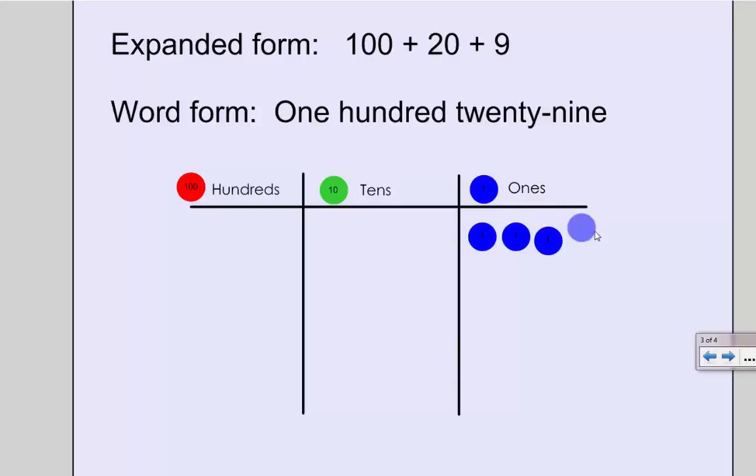And whenever I make anything more than five I like to group them in groups of five so they look similar to a 10 frame, so I can quickly and easily count and know that one less than 10 is nine. I have nine ones, 20 is made up of two tens, and 100 is made up of 100.